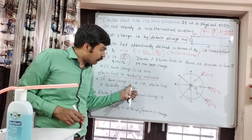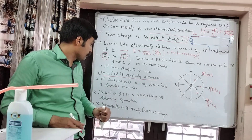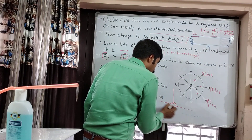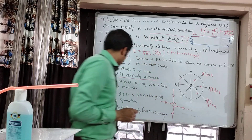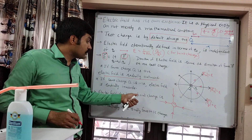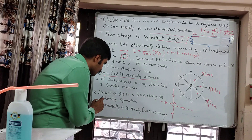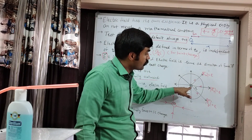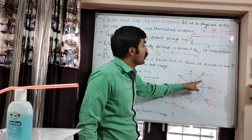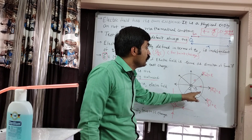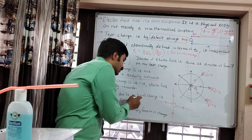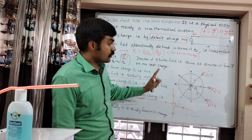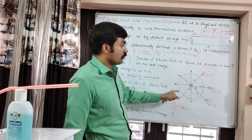If the source charge Q is negative, the electric field will be radially inward. If we have a negative source charge, all the electric field directions will be inward. And electric field due to a point charge is spherically symmetric. This means that if we draw a sphere of a fixed radius r with the source charge at the center, the magnitude of the electric field everywhere on the surface of that sphere will be the same. Hence, the electric field of a point charge is spherically symmetric. Note that when we say spherically symmetric, the magnitude of electric field is the same everywhere on the surface of the sphere.